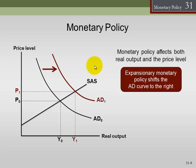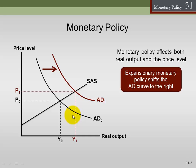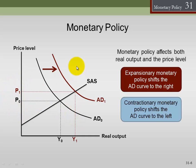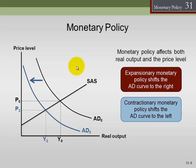If we have an expansionary monetary policy, that's generally going to affect aggregate demand. The expansionary monetary policy increases the supply of loanable funds available, lowering the interest rate. If we lower the interest rate, we consume more and invest more. If we consume more and invest more, we have a rightward shift in aggregate demand — an increase — and a short-run increase in real output. We've stimulated the economy, but at a cost: a higher price level.